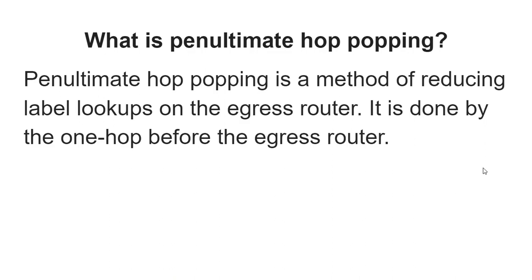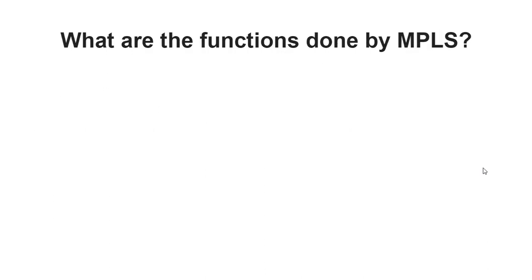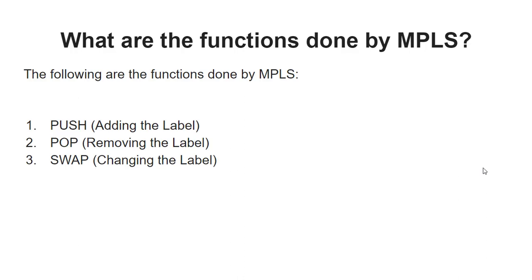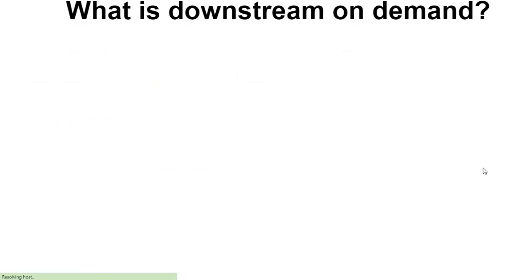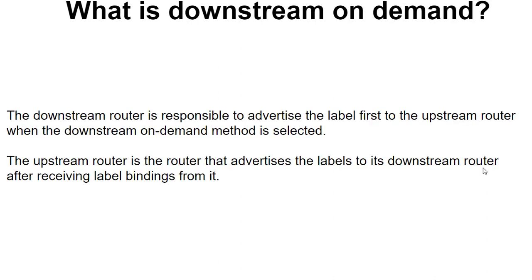Question 12: What are the functions performed by MPLS? Answer: MPLS carries out three primary functions — push, which adds the label; pop, which removes the label; and swap, which changes the label. Question 13: What is downstream on demand? Answer: In the downstream on demand method, the downstream router advertises the label to the upstream router, which then binds labels to its downstream router.